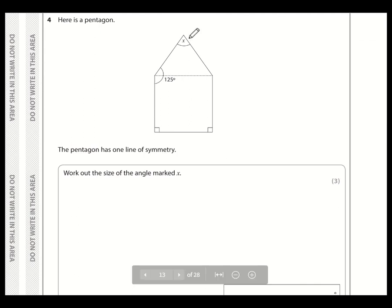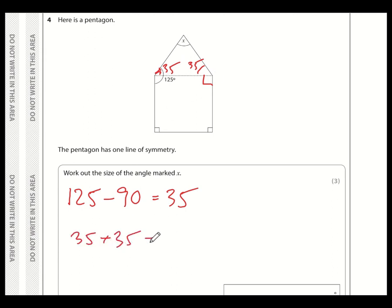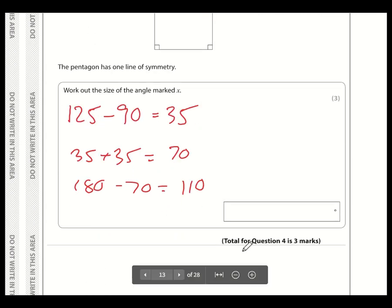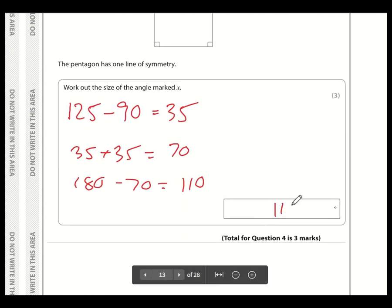Okay, so we need to work out the angle X here. So we've got a line of symmetry. If this is a right angle, then this here must be a right angle. So this here is a right angle as well. And the right angle is 90 degrees. So 125 degrees minus 90 degrees is 35. So this angle here is 35. And this angle here is also 35. So here we've got a triangle. 35 plus 35 is 70 degrees. So 180 take away 70 is 110. So therefore, X is 110 degrees.